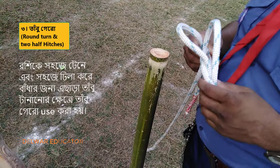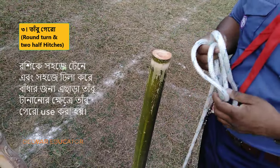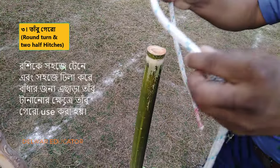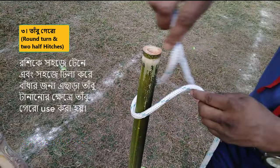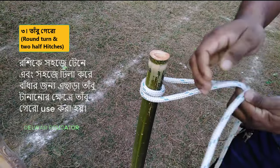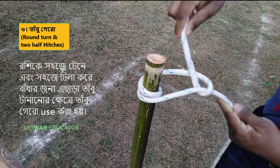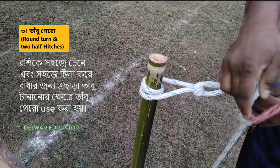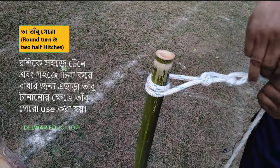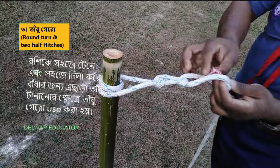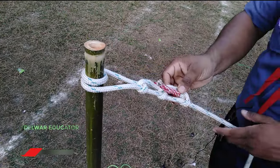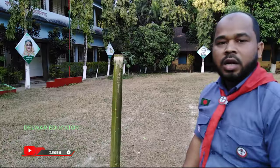It will be a round of round. I will make a round of round with a round, and I will make it like this. Then I will make a round of round with Thabugri. Thank you so much for joining us. Subscribe to my channel.